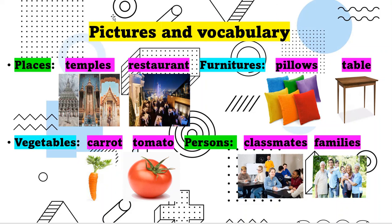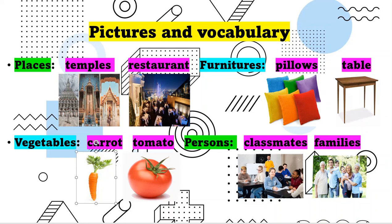Here we have the pictures and vocabulary. What is the vocabulary? We have vocabulary about places, vegetables, furniture, and persons. For places we have temple and restaurant. For furniture we have pillows and table. For vegetables we have carrot and tomato. For persons we have classmates and families.